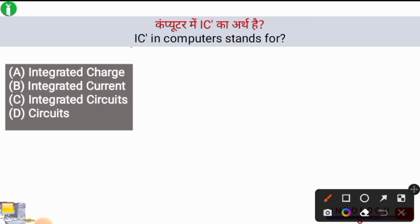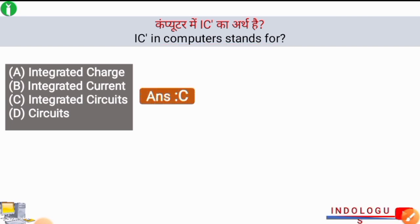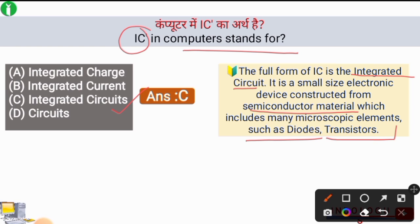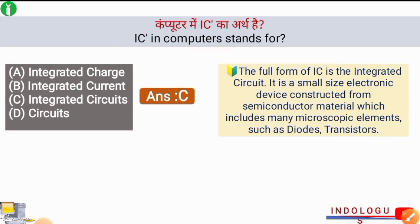Next question: IC in computer stands for what? The right answer is option C, Integrated Circuits. The full form of IC is Integrated Circuit. It is a small-size electronic device constructed from semiconductor material, which includes many microscopic elements such as diodes and transistors.